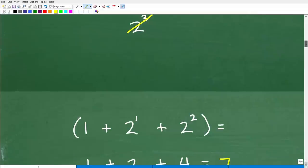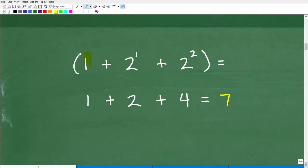So let's go ahead and figure that out right now. So 1 is, of course, just 1. 2 to the 1st is simply 2. 2² is 4. 1 plus 2 is 3. Plus 4 is 7.